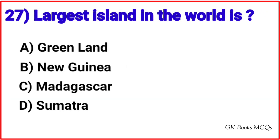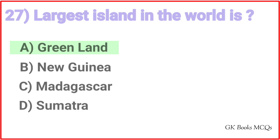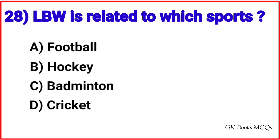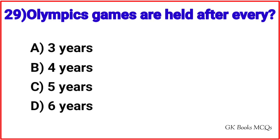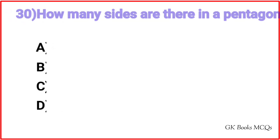Question 27: Largest island in the world is? Correct answer is option A, Greenland. Question 28: LBW is related to which sport? Correct answer is option D, Cricket. Question 29: Olympic Games are held after every? Correct answer is option B, 4 years.